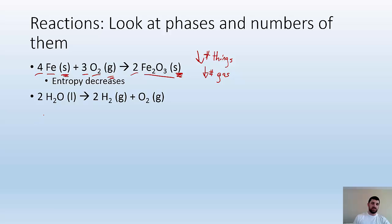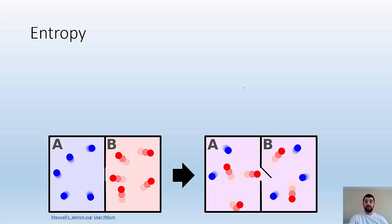Here's another example. I have H2O liquid, and I got two of them, becoming two H2 gases and one O2 gas. So I'm going from a liquid, and I'm making three gases. This is going to be an example where entropy goes up because I'm starting with a liquid and ending up with only gases. Gases are more chaotic, they can move around more than liquids can.